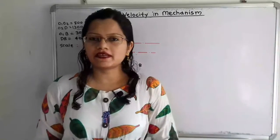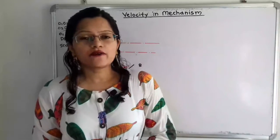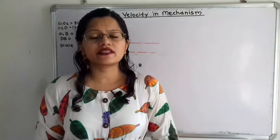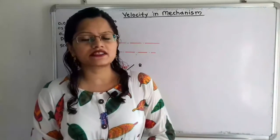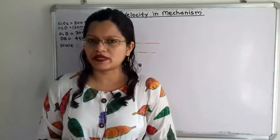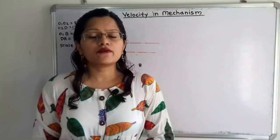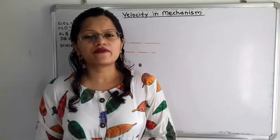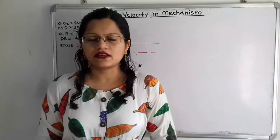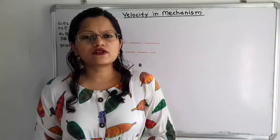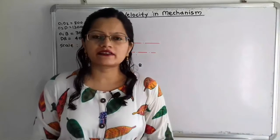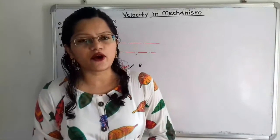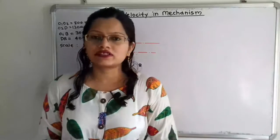Hello friends, this is Priyanka. Today we are going to solve a problem on the crank and slotted lever quick return motion mechanism of the shaping machine. In this video we are going to draw a space diagram and velocity diagram with some suitable scale, and we are also going to learn how to select the direction for the angular velocity of any link from the velocity diagram.